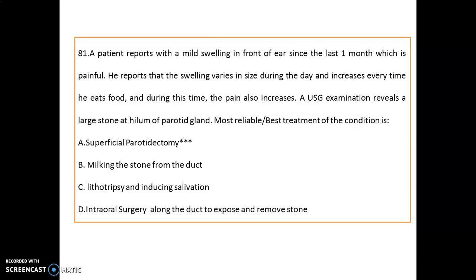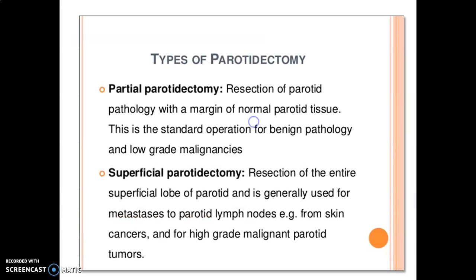The first case: a patient presents with mild swelling in front of the ear since one month. The swelling is painful and the size varies during the daytime, increasing when the patient eats food. When USG is done, it reveals a large stone at a high level of the parotid gland. The most reliable treatment in this condition is superficial parotidectomy.